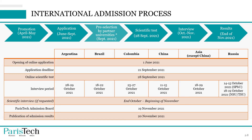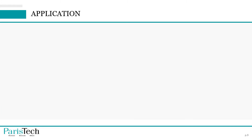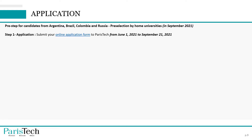For a more complete agenda, you can check the form below. The only difference in dates is the interview period — depending on the country you come from, you will not take the interview at the same time. Other than that, all dates are exactly the same. There is a pre-step for candidates from Argentina, Brazil, Colombia, and Russia, which is pre-selection by home universities. The first step is the application itself: you must submit your online application form to ParisTech from June 1st, 2021 to September 21st, 2021.